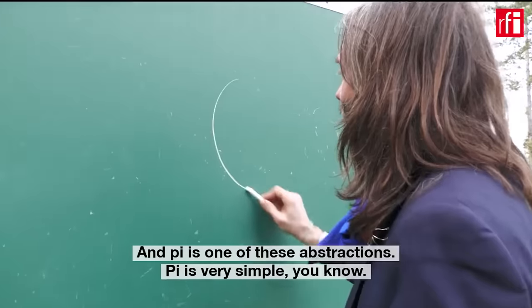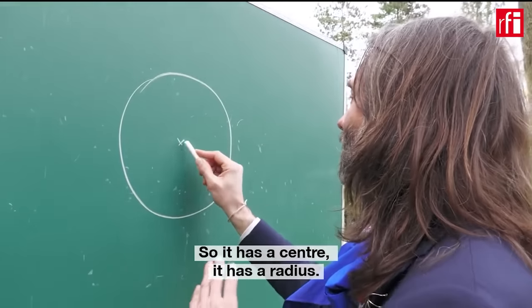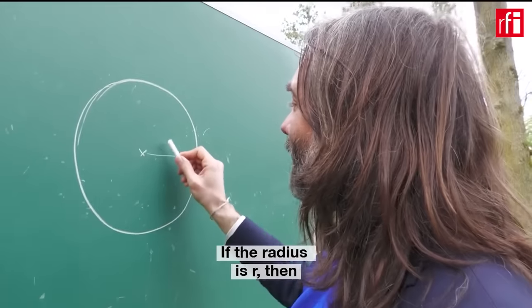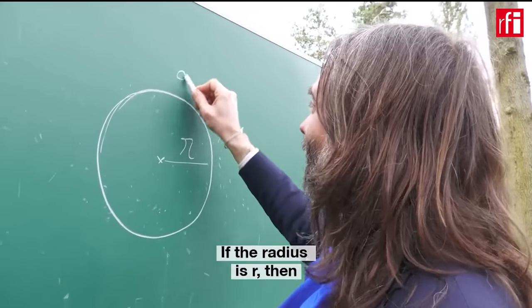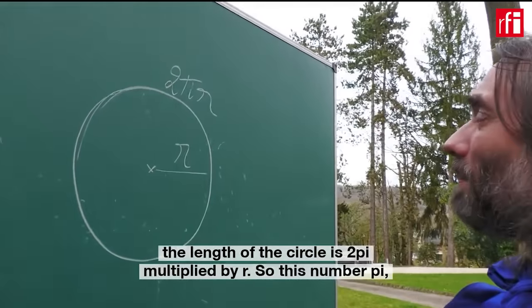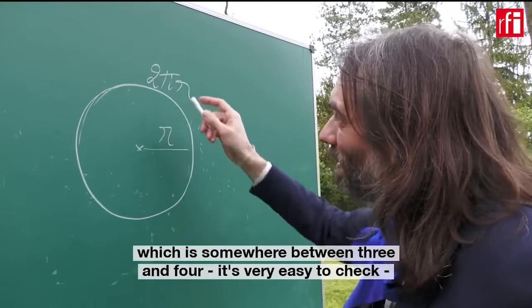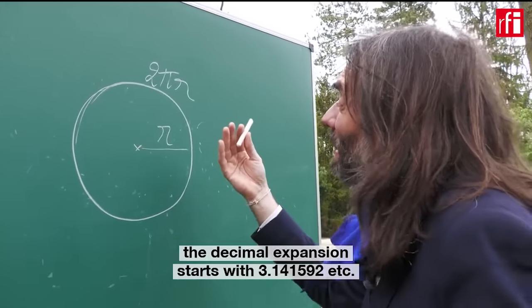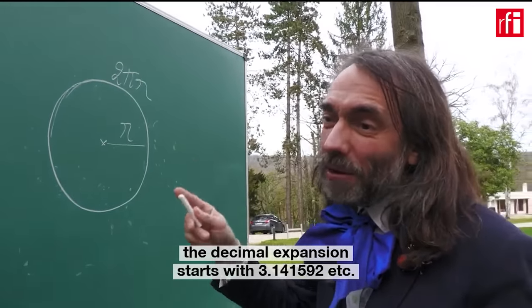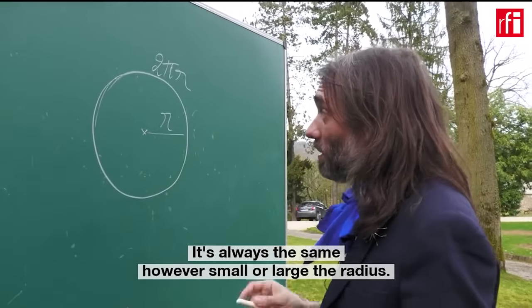Pi is very simple. If this is a circle, a perfect circle, it has a center, it has a radius, you may trace it using a compass. And if the radius is R, then the length of the circle is 2π multiplied by R. So this number pi, which is somewhere between three and four, the decimal expansion starts with 3.141592, et cetera. It's always the same whatever small or large the radius.